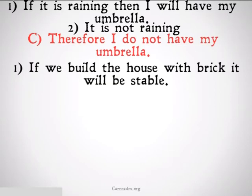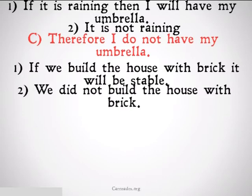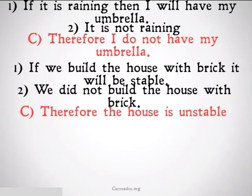If we build a house with brick, it will be stable. We didn't build the house with brick, therefore the house is unstable. Not necessarily — we could have built the house out of steel, we could have built the house out of diamond, we could have built it out of, I don't know, adamantium.